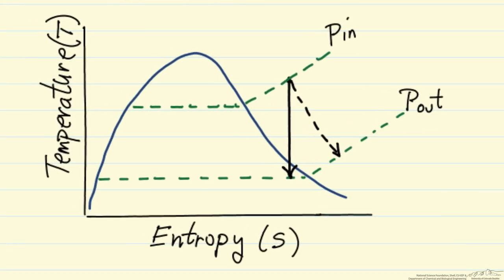What I have drawn here is a temperature-entropy diagram showing the phase envelope separating the two-phase region — liquid and vapor — from pure liquid or pure vapor. Our starting condition is right here at the inlet to the turbine. It's in the superheated region. I have drawn a constant pressure line for the inlet conditions and a constant pressure line for the outlet conditions.